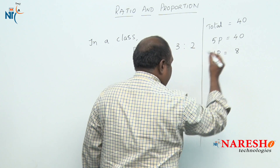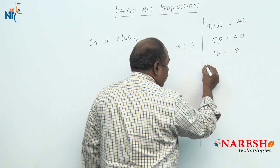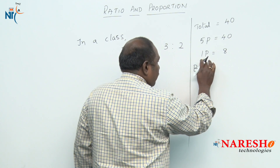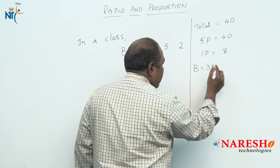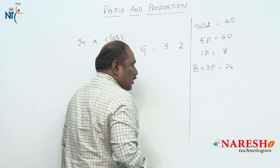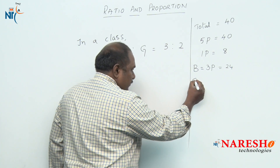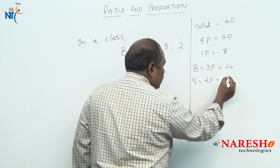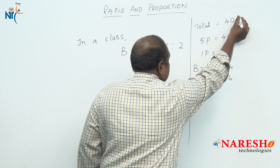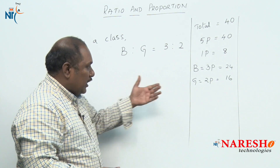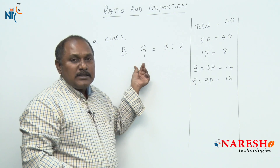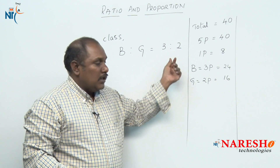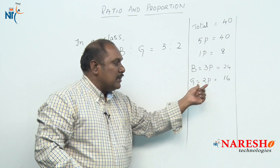So 1 part will be equal to 8. The number of boys is 3 parts — if 1 part is 8, then 3 parts equals 24. The number of girls is 2 parts — 1 part is 8, so 2 parts equals 16. If the total number of students is 40 and boys and girls are in the ratio of 3 is to 2, then boys are 24 and girls are 16.